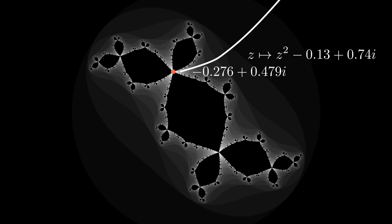One external ray that lands at a cut point of the Julia set is shown, which happens to also be a fixed point of the polynomial. When we apply the polynomial, this external ray must map to another external ray that also lands at the fixed point.